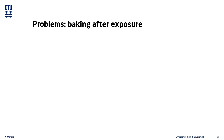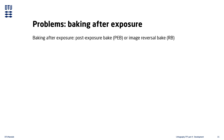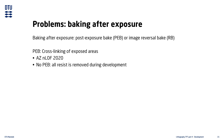Some resists require an additional baking step after the exposure. This baking step is called post-exposure bake or image reversal bake, depending on the exact process taking place. Some resists use thermal amplification of the exposure to cross-link the polymers in the resist — an example is AZ-ENLOF 2020. If the PEB is forgotten, then all the resist will be removed during the following development step.